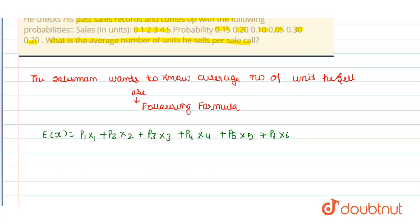We get 0.15 × 0 + 0.20 × 1 + 0.10 × 2 + 0.05 × 3 + 0.30 × 4 + 0.20 × 5.